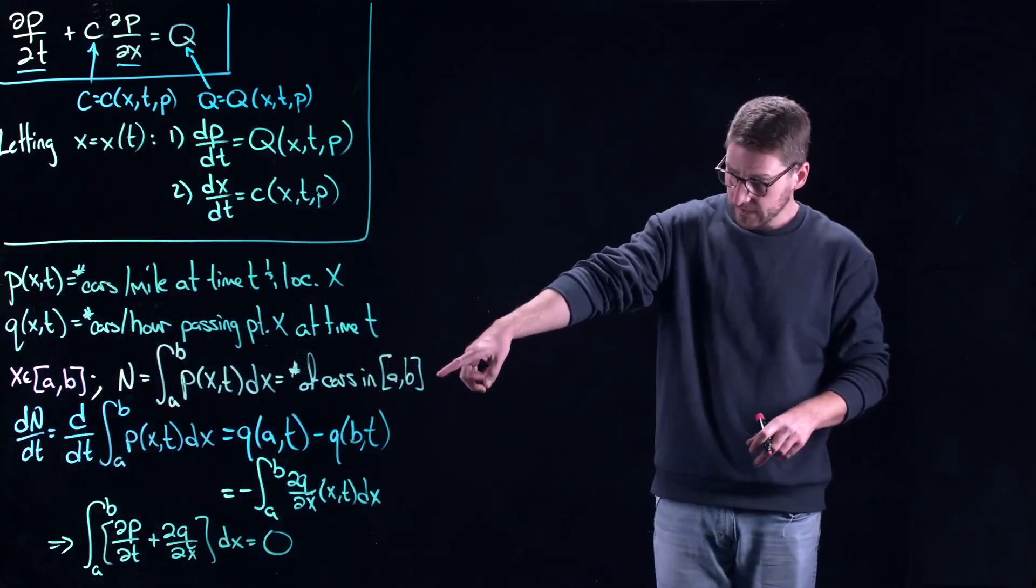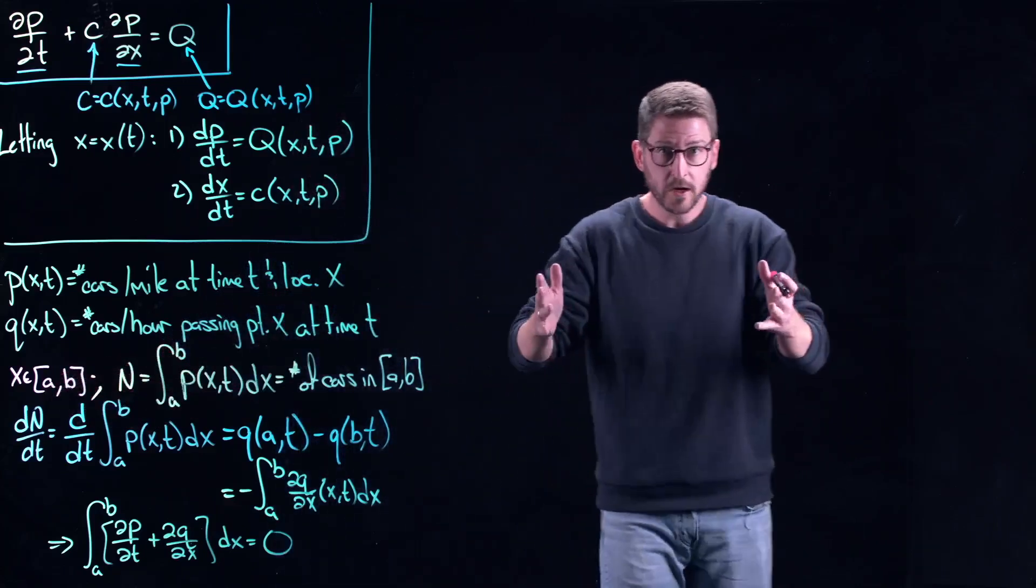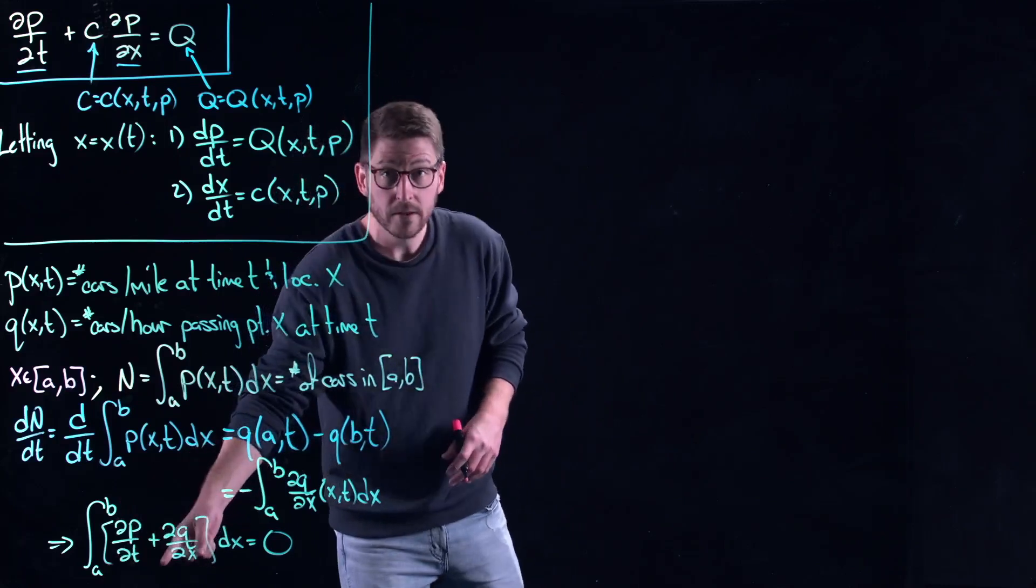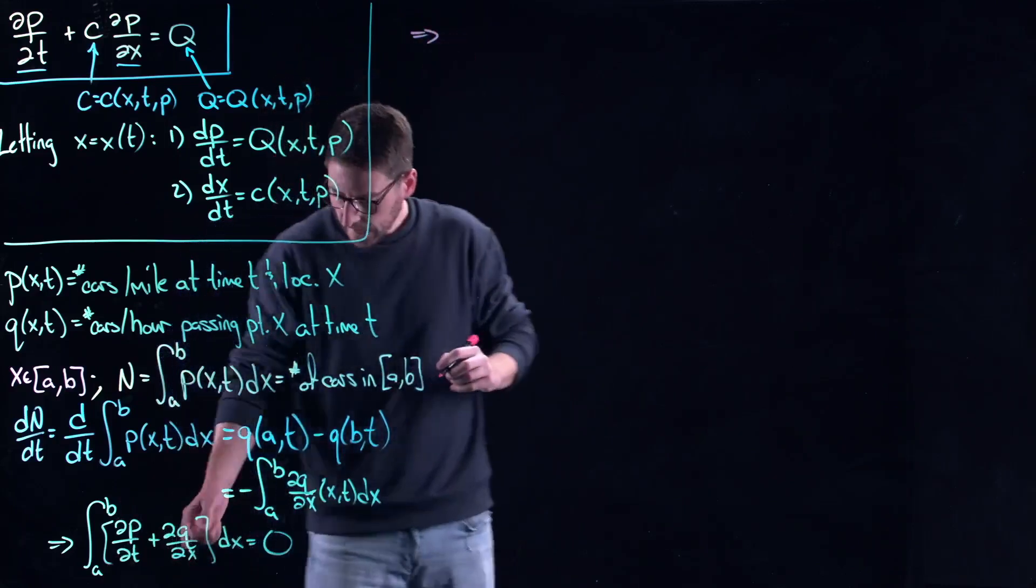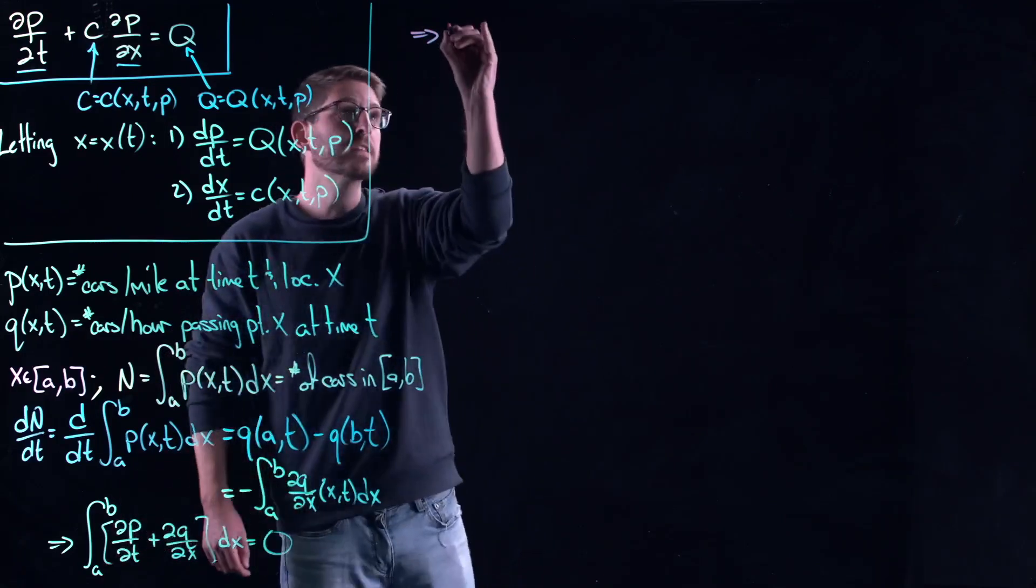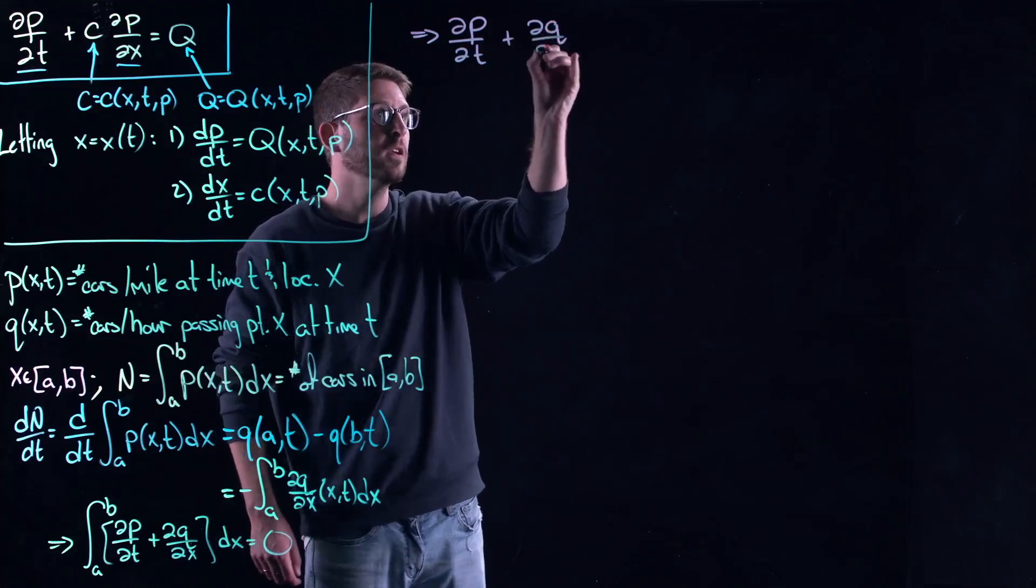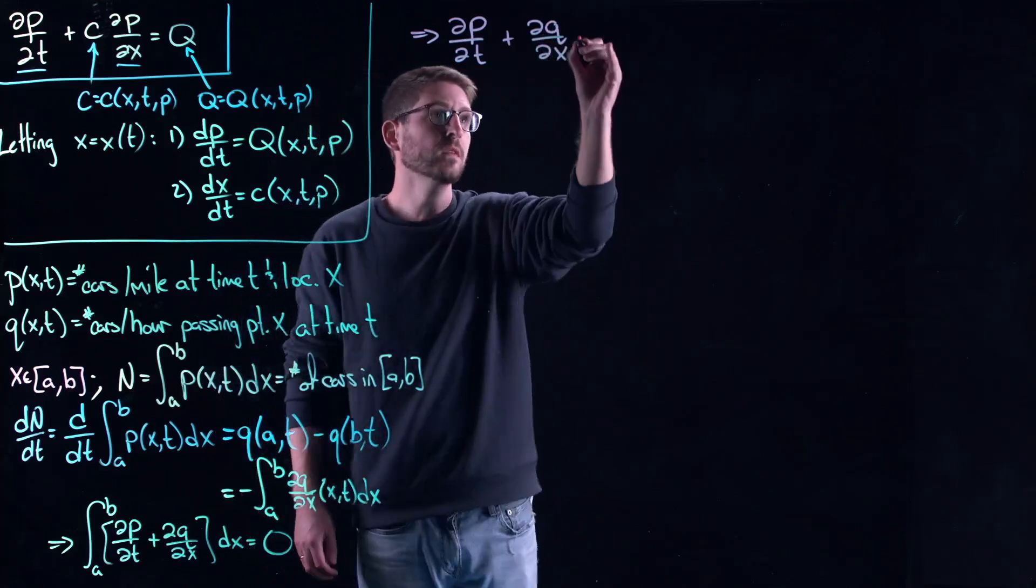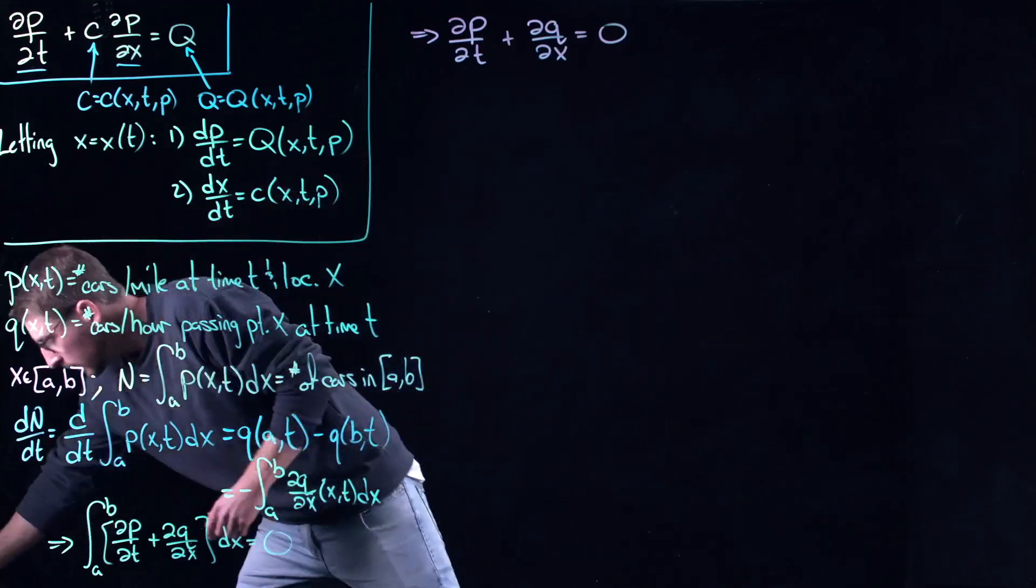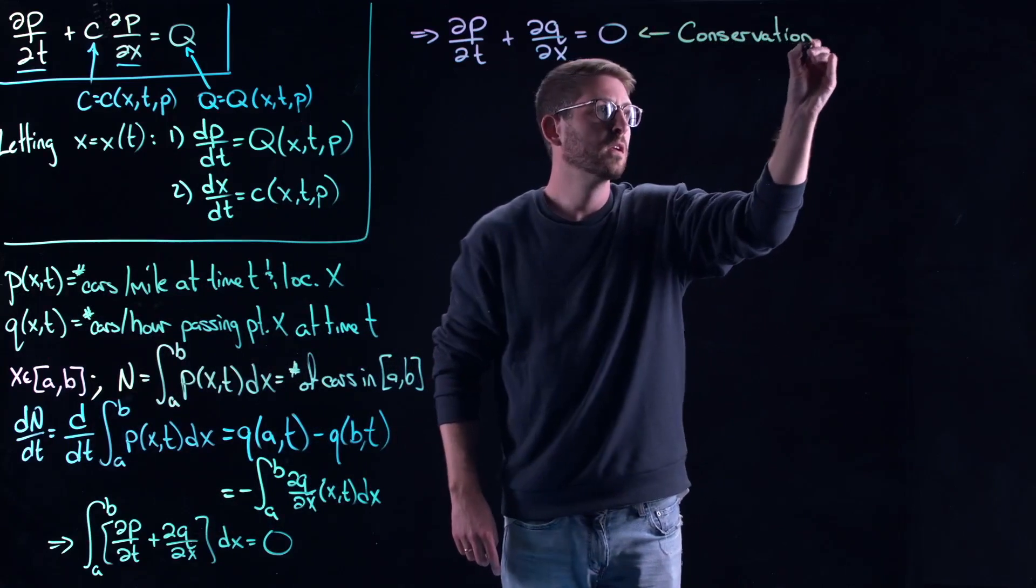But in this case, I'm saying that something integrals to zero. A and B here are completely arbitrary. I could take this patch of highway, I could take smaller patches of highway. So if I change the endpoints here, but I always have this equation, this will tell me that whatever I'm integrating has to be zero. Because it doesn't really matter what I choose A and B to be here. So this gives me this equation right here. And so we're getting, you can probably feel it, we're getting a little bit closer to our quasi-linear equation. Not quite there yet, but this equation is called the conservation of cars equation.